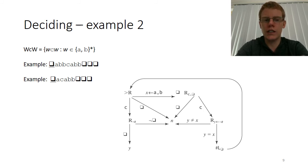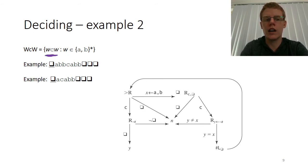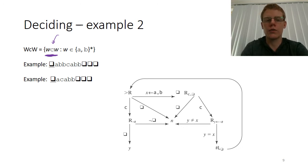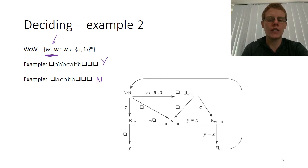This next machine is going to decide another non-context-free language: strings of the form W C W, where we have a string made of A's and B's, then a C in the middle, and the string must be the same on both sides. We'll go through two example strings — one a yes instance and one a no instance — and I again recommend working through additional examples after watching.